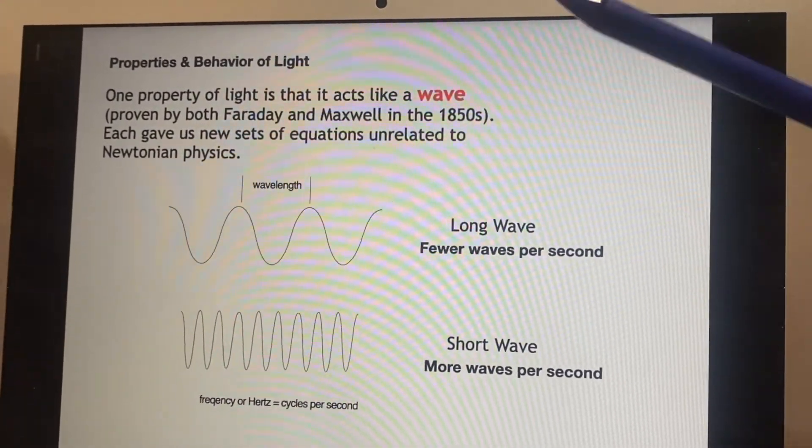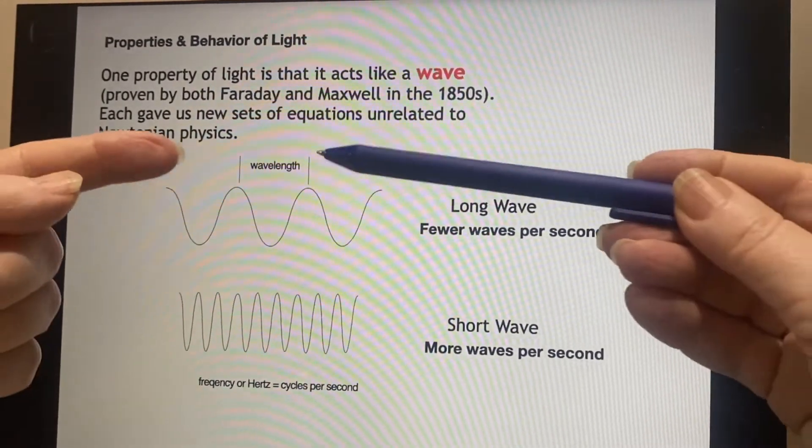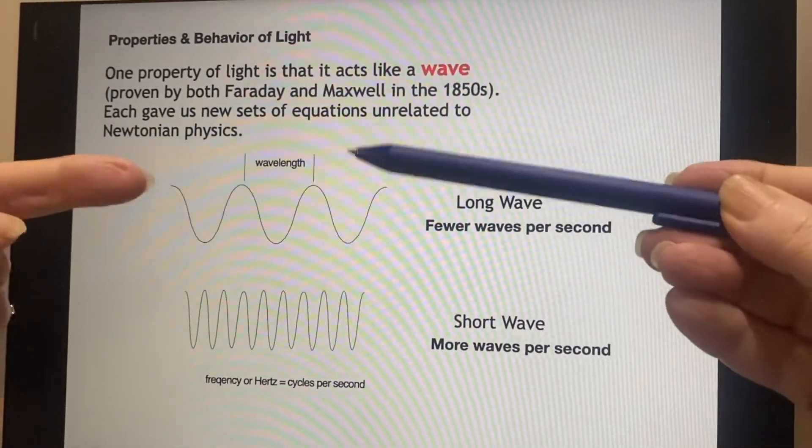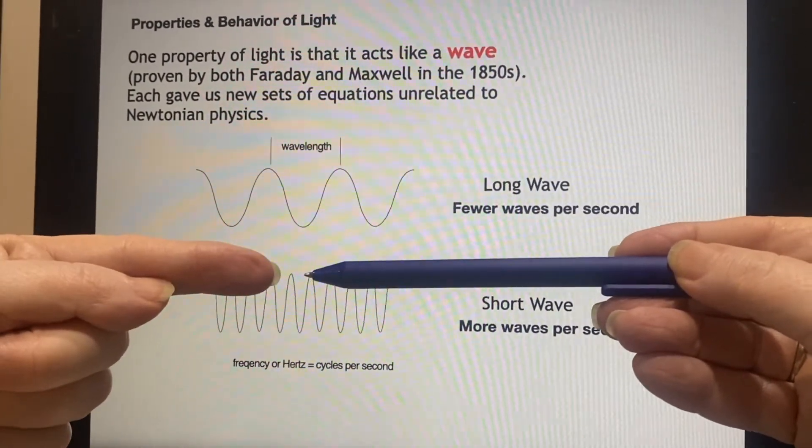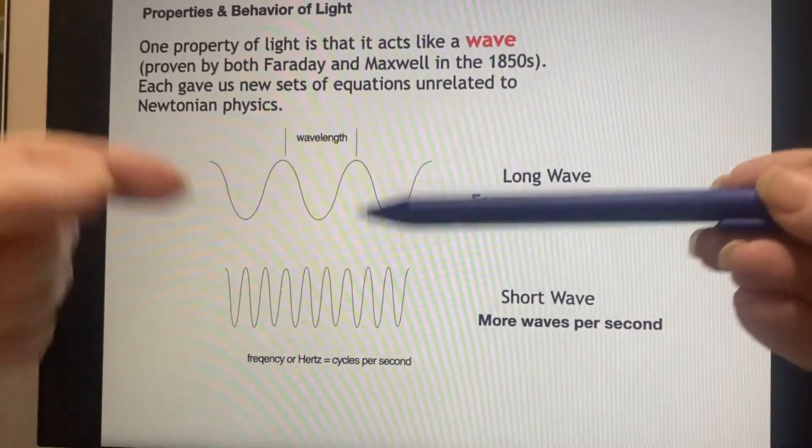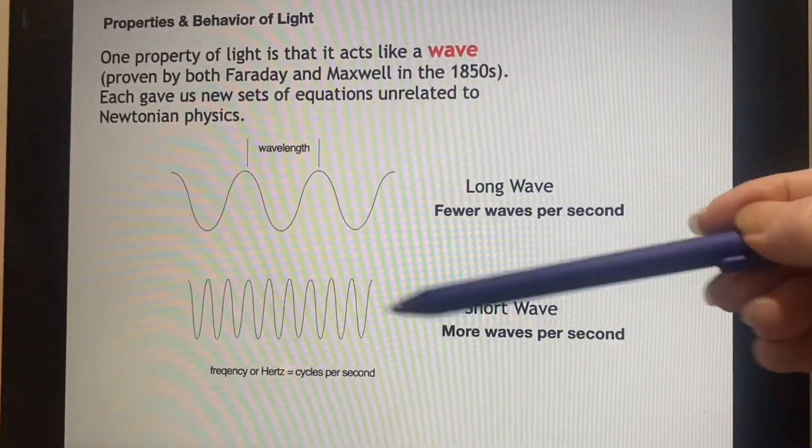So that was a very interesting development that was happening. So here's my example, essentially repeated with better graphics. Here's a wavelength. And then here you can see the wavelength is much smaller, but you can see if the whole thing's moving past you, very few of these are going to move past you.